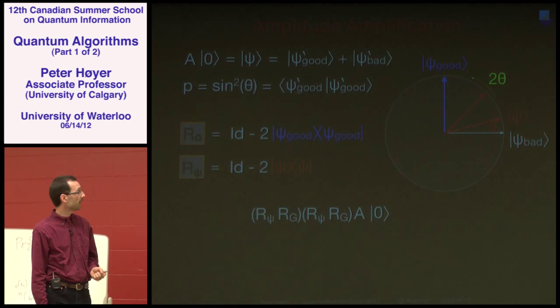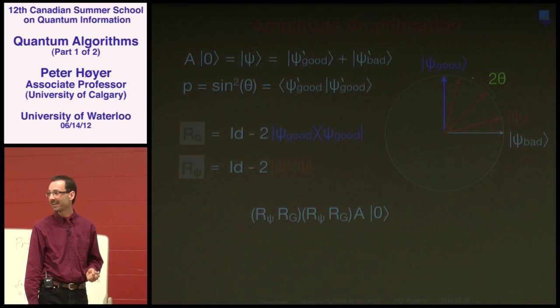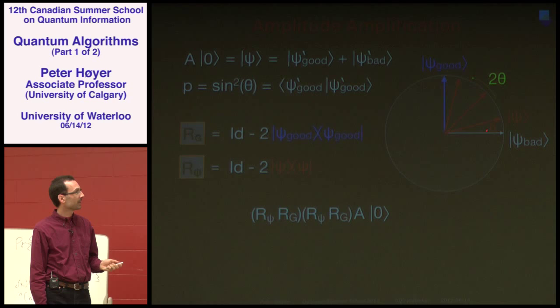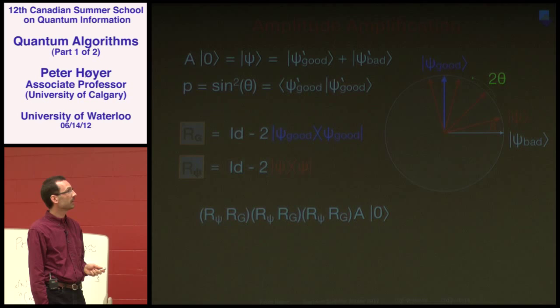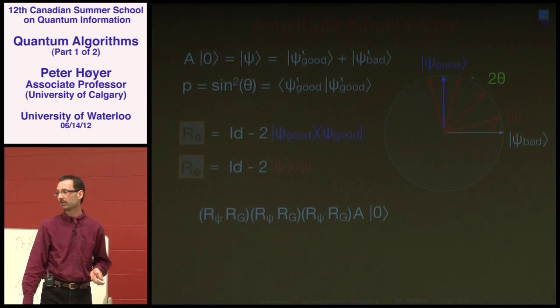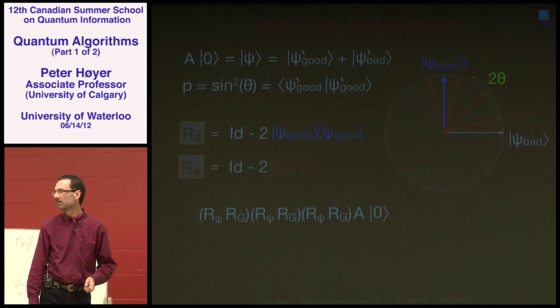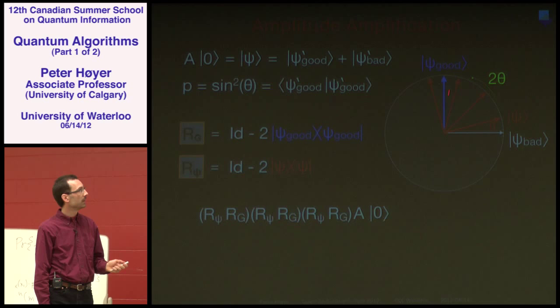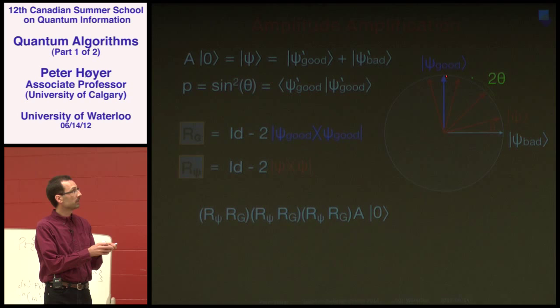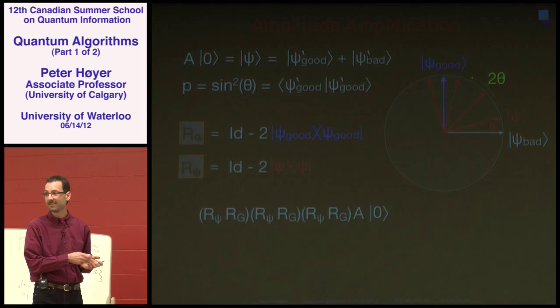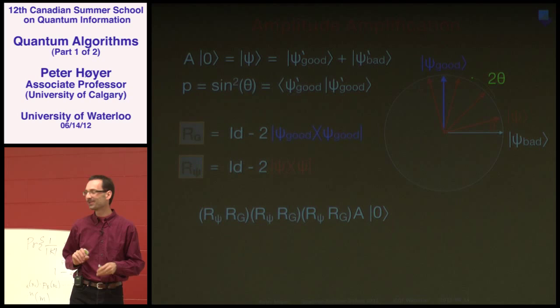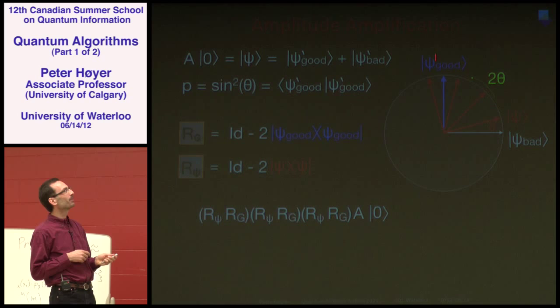Each application of the Grover Iterate rotates the state by 2θ toward ψ_good. After a few iterations — say reaching 5θ, then 7θ — we get very close to ψ_good and measuring gives a solution with high probability. The number of iterations needed is approximately π/(4θ). A key question: how do you know when to stop? We'll get to that shortly.